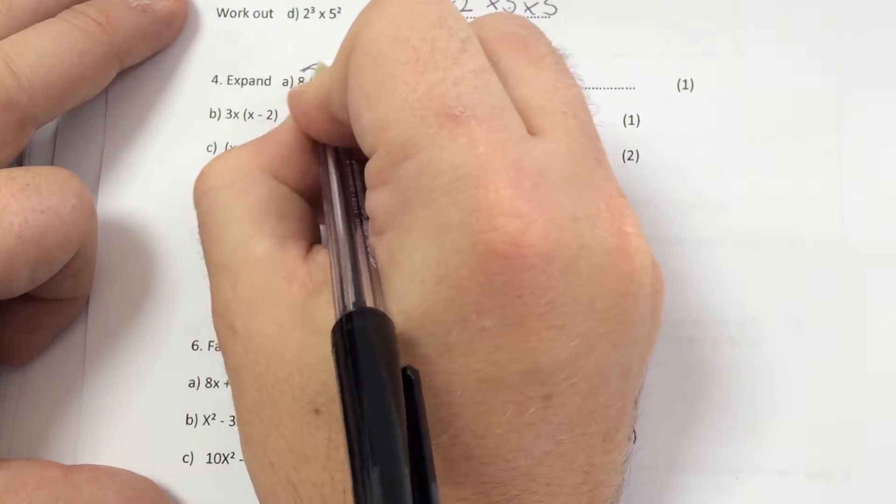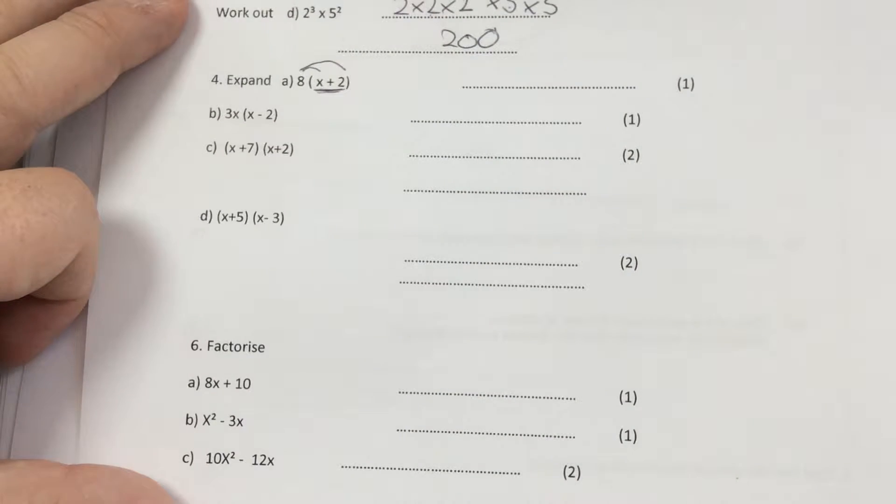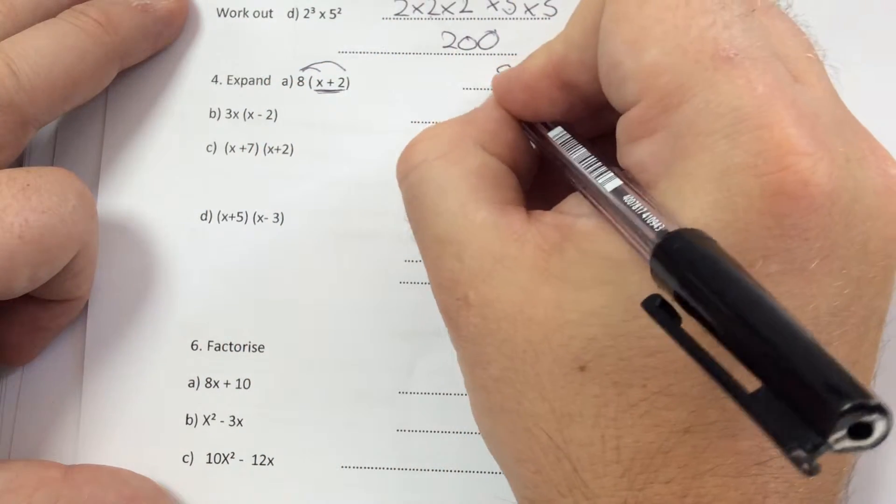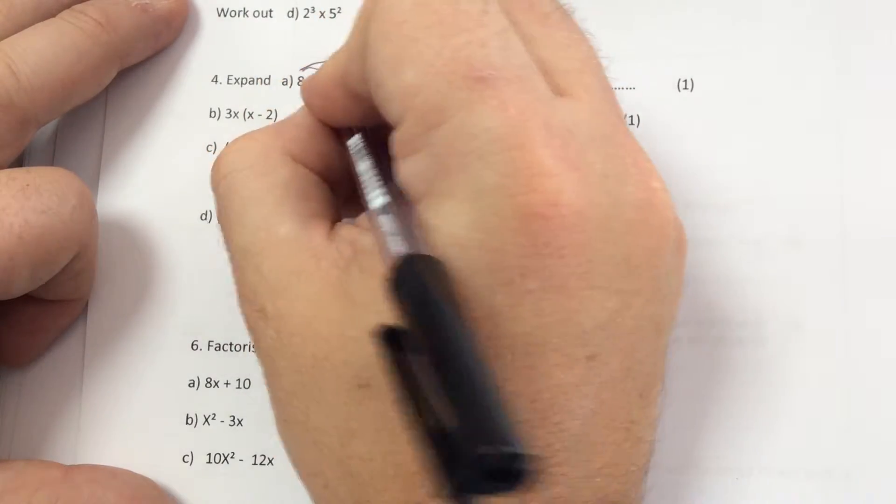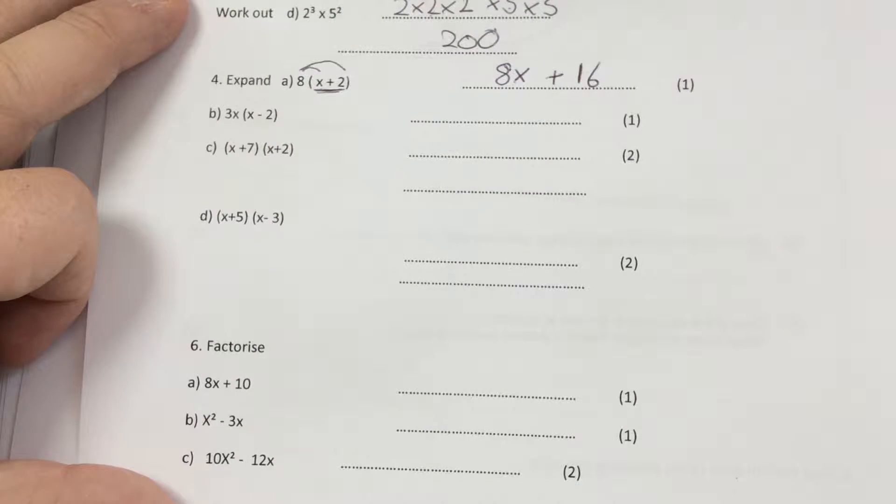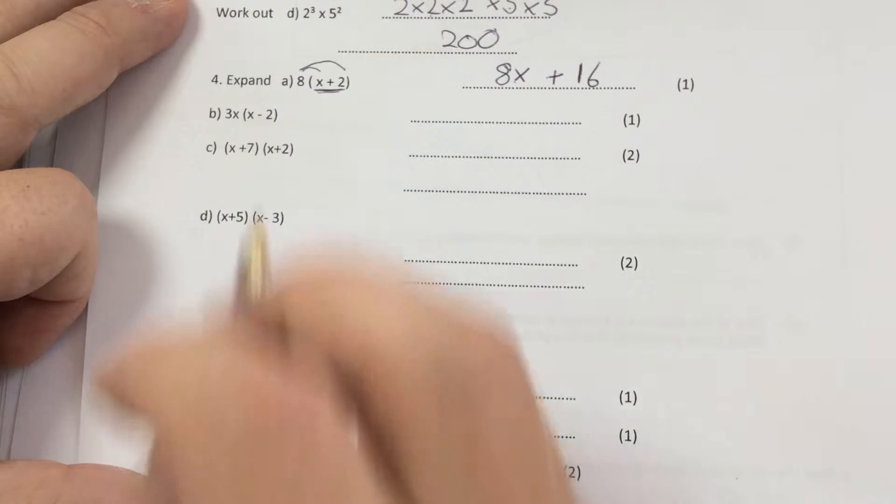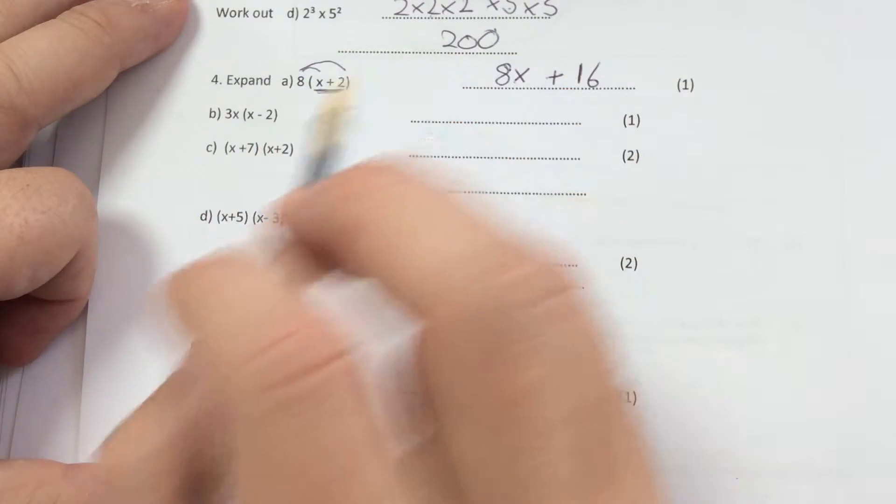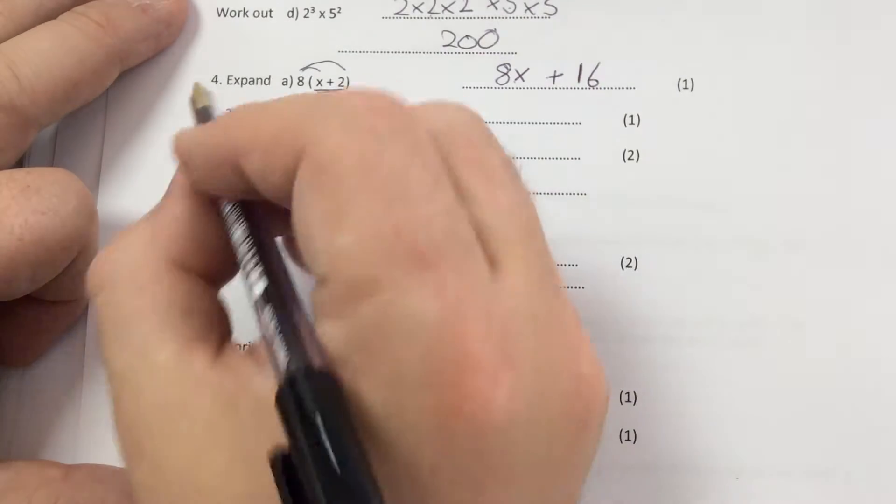So with this one, you're doing 8 times x and 8 times 2. So 8 times x is 8x and then 8 times 2 is 16.